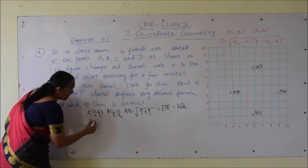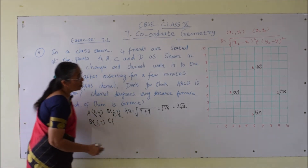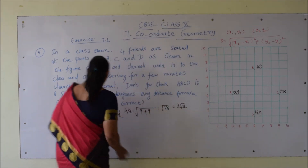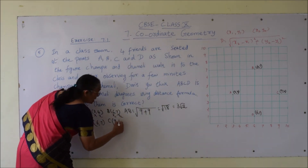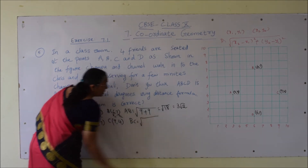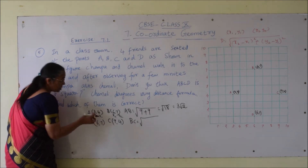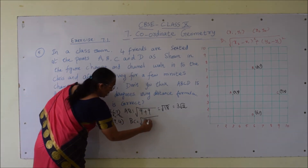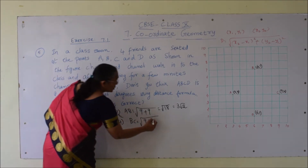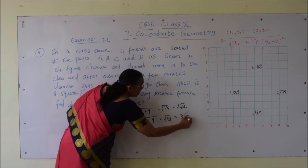Let us check BC distance. B coordinates are (6, 7) and C coordinates are (9, 4). Using the formula: root over (9 − 6)² + (4 − 7)² = root over 3² + (−3)² = root over 9 + 9 = √18, which is 3√2.